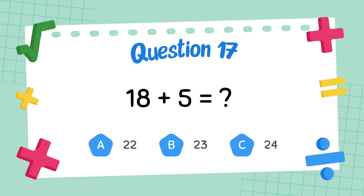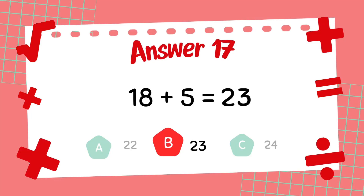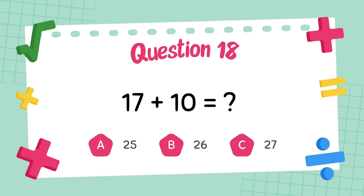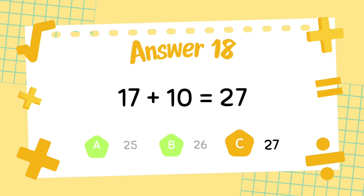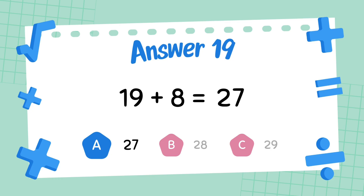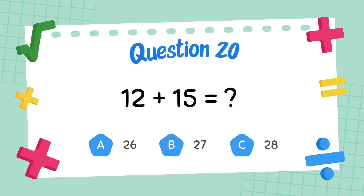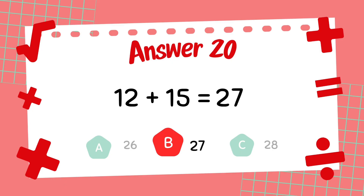What is 18 plus 5? The answer is 23. What is 17 plus 10? The answer is 27. What is 19 plus 8? The answer is 27. What is 12 plus 15? The answer is 27.